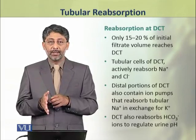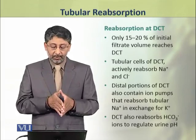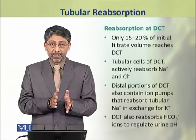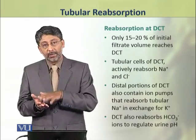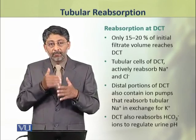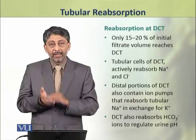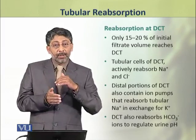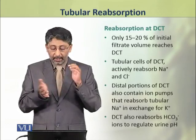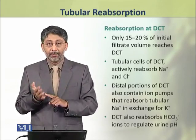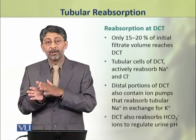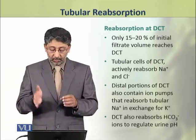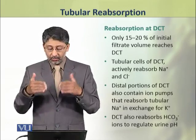Now we shall discuss reabsorption in the distal convoluted tubule. Initial filtrate کا تقریباً 15 سے 20 فیصد حصہ distal convoluted tubule تک پہنچتا ہے۔ The cells of the distal convoluted tubule actively reabsorb sodium and chloride ions. The distal portion also contains ion pumps which reabsorb tubular sodium in exchange for potassium ions. اس کے علاوہ، the distal convoluted tubule also reabsorbs bicarbonate ions to regulate urine pH.